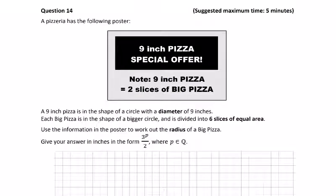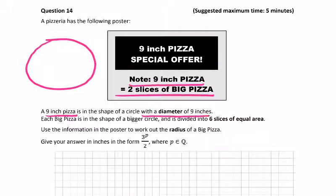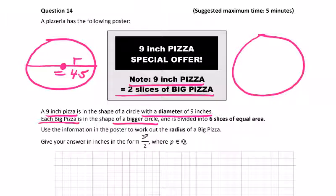Question 14 to end this: A pizzeria has the following poster - 9 inch pizza special offer: 9 inch pizza is equal to 2 slices of big pizza. We're told a 9 inch pizza is the shape of a circle with a diameter of 9 inches. So we normally use the radius in these questions. I would write down straight away the radius is equal to half of 9: 4.5. Each big pizza is the shape of a bigger circle and it's divided into 6 slices of equal area. Let's try and do 6. Should be good with all the practice you've done, that looks pretty accurate, all about 60.